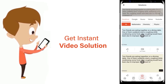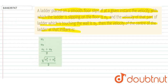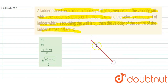A ladder placed on a smooth floor slips. At a given instant, the velocity with which the ladder is slipping on the floor is v1 and the velocity of the part of the ladder touching the wall is v2. We need to calculate the velocity of the center of the ladder at this instant.